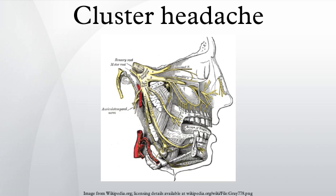Though a CH is strictly unilateral, there are some documented cases of side shift between cluster periods, and extremely rare simultaneously bilateral headache. The pain occurs on one side only, around the eye, particularly above the eye, in the temple, or in any combination.